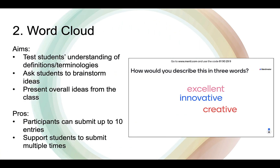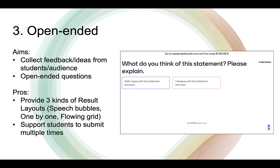When teaching definitions and asking your students to brainstorm ideas, WordCloud would be an excellent choice. The word that appears more frequently will have a bigger font size. It allows participants to submit up to 10 entries and submit multiple times. Open-ended question is a good choice for collecting students' feedback and knowing their perceptions about something. It provides three kinds of result layouts and supports students to submit multiple times.